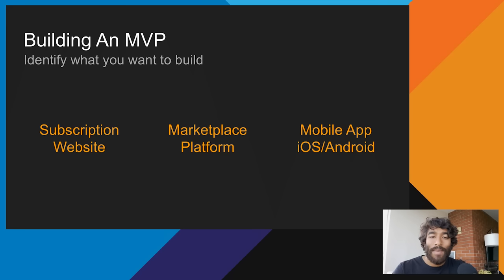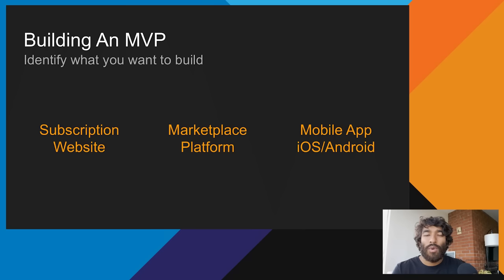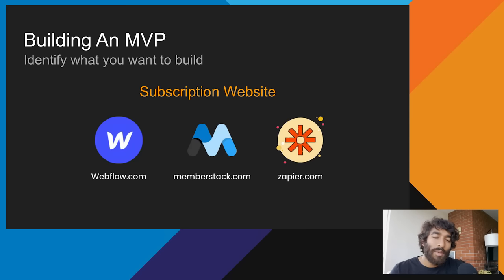The first decision we need to make is what type of product do we want to build. Do we want to build a simple website with a gated community or paywalled content? Or do we want to build a marketplace type of business similar to Airbnb — two-sided, with a supply side, a demand side, and transactions? Or do we want to build a mobile application for the App Store or the Play Store? There are tools for all of these examples. Let's start with a simple subscription website or subscription business — here are three tools that will get you started, and you can build an entire business off the back end of this.